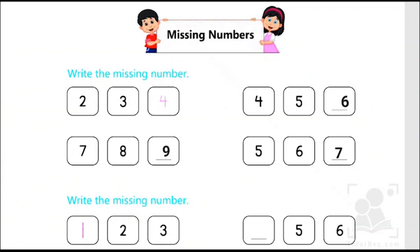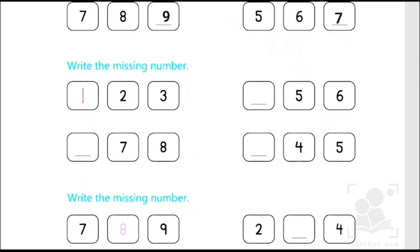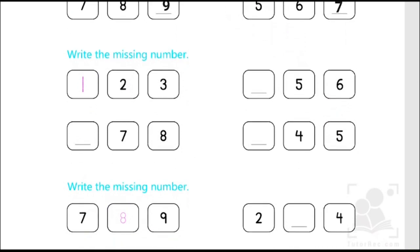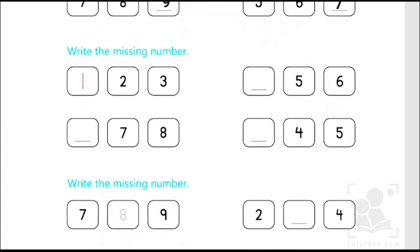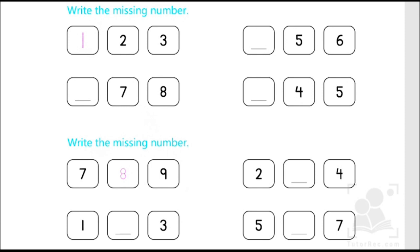So kids, we have to do the whole exercise like this. We have to write the missing number. Sometimes we have to find out the number that comes after and comes before. In the next part of the exercise we have to find out what number comes before. As you can clearly see, the first one is missing, which has already been done for us.